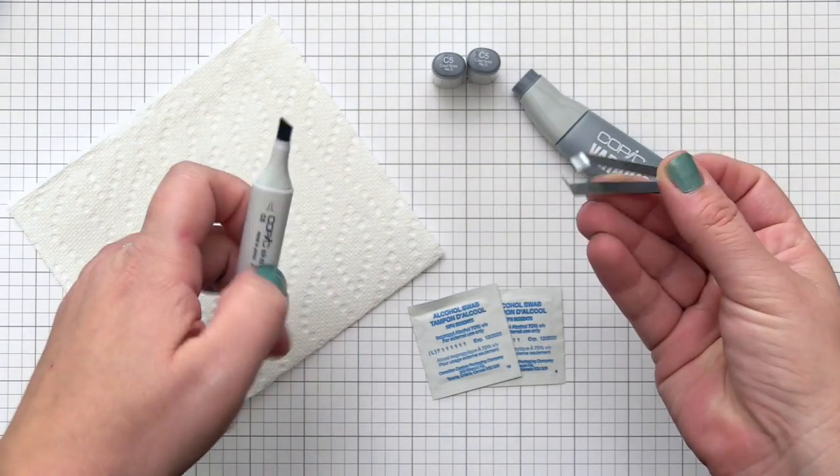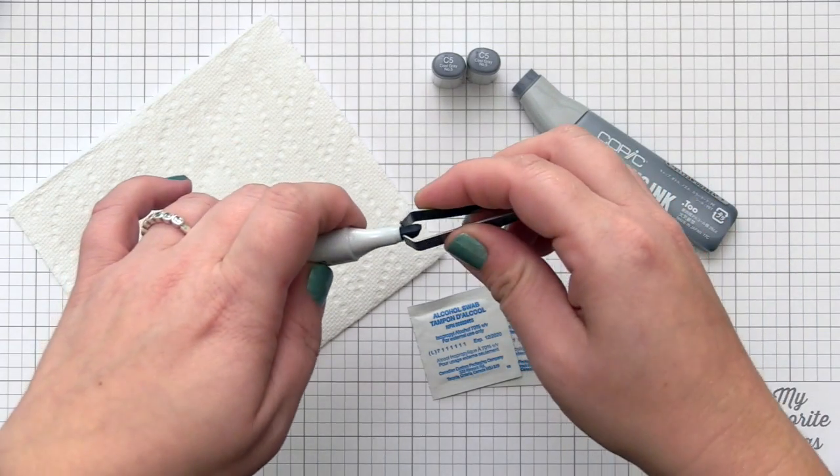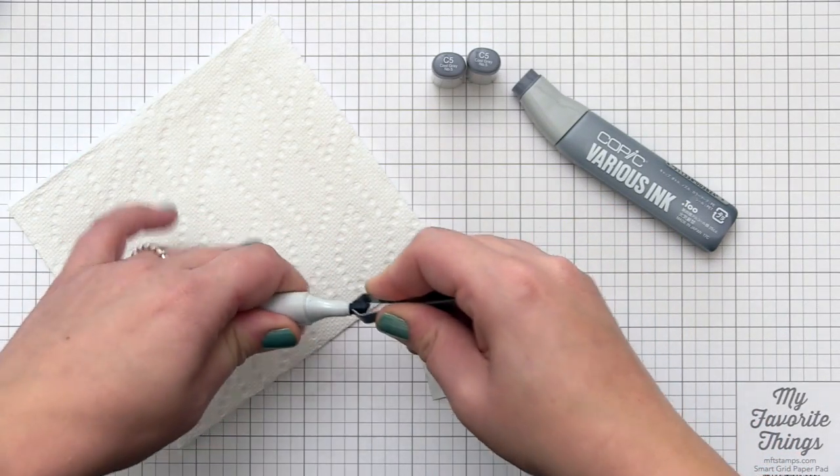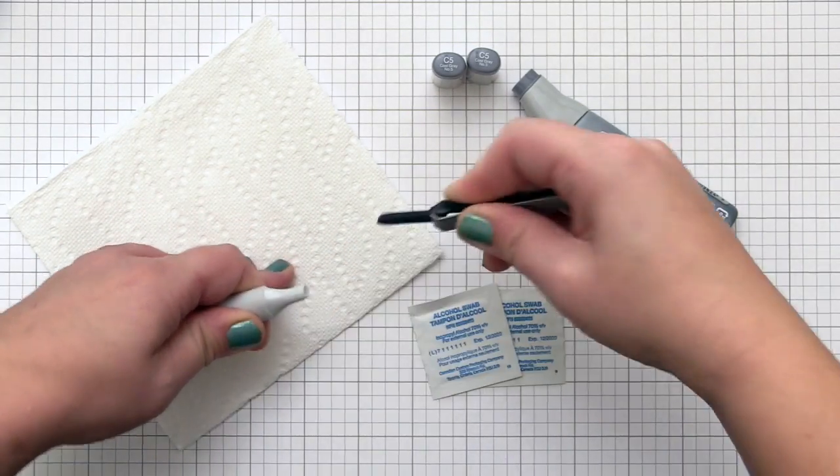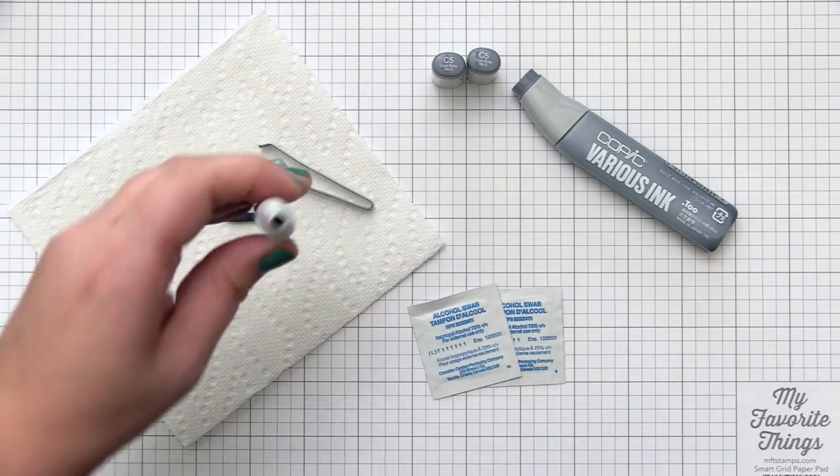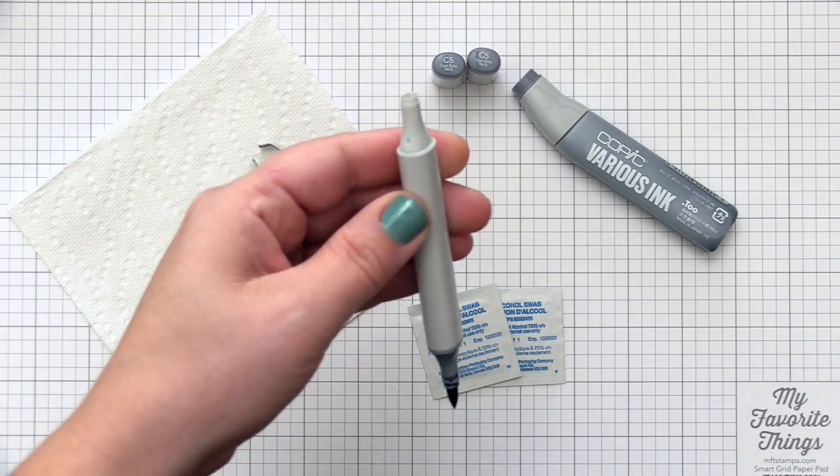To actually refill the marker, you want to take out the chisel nib. I have the Copic tweezers here, which really help grab onto that nib and allow me to pull it straight out of the marker. You can see I've removed it, and I'm laying it on my paper towel. Now I have an opening at the top of the marker.